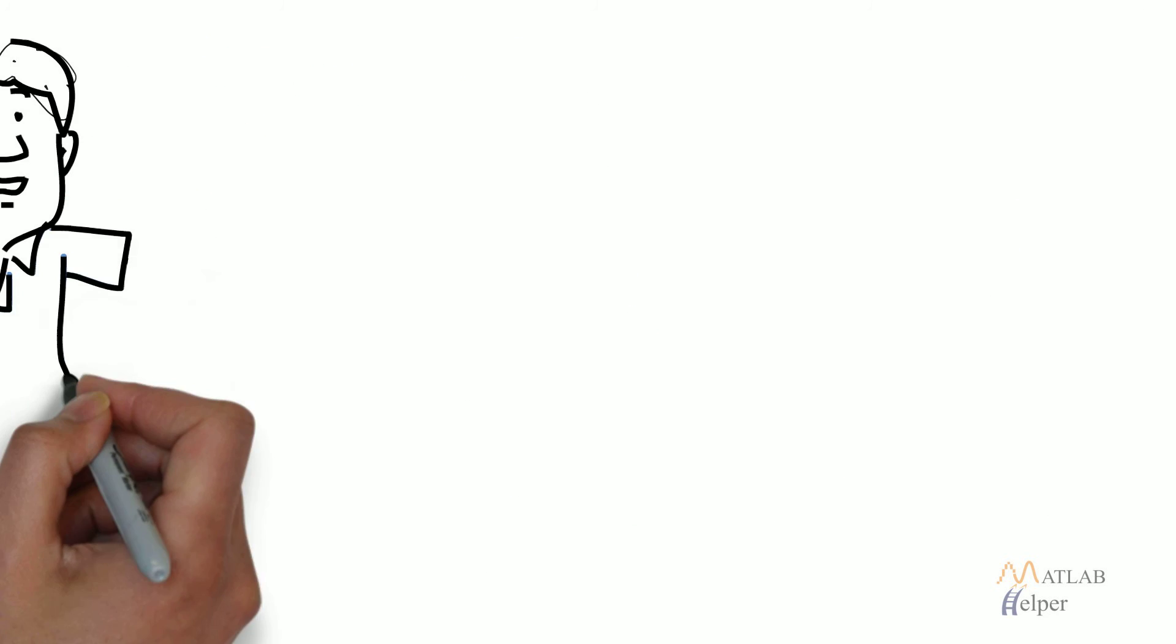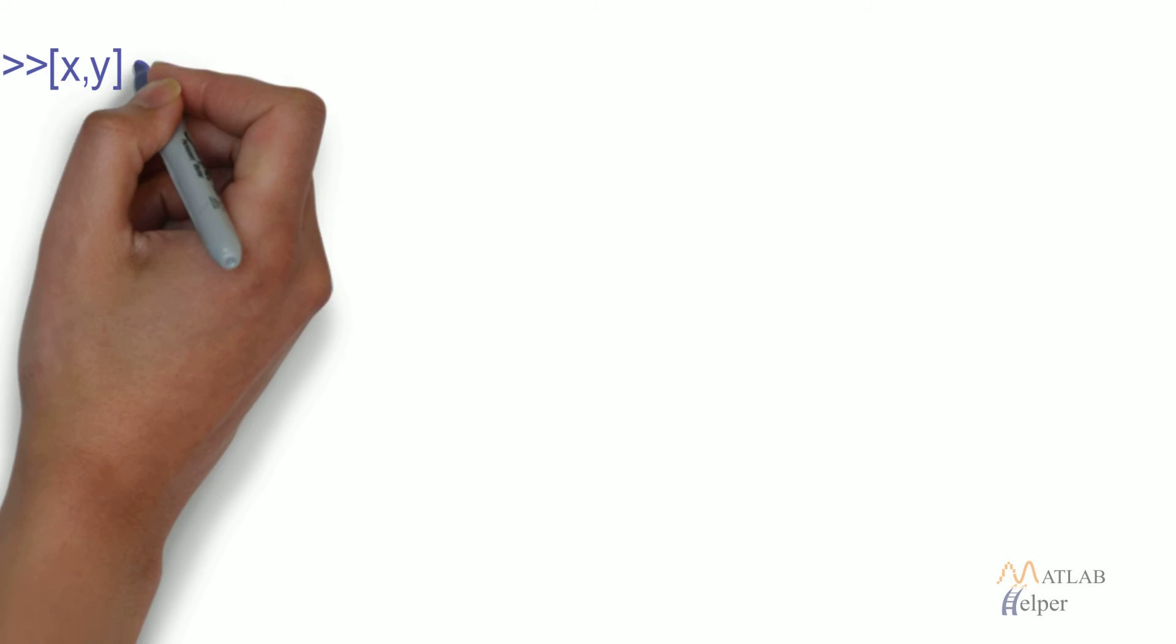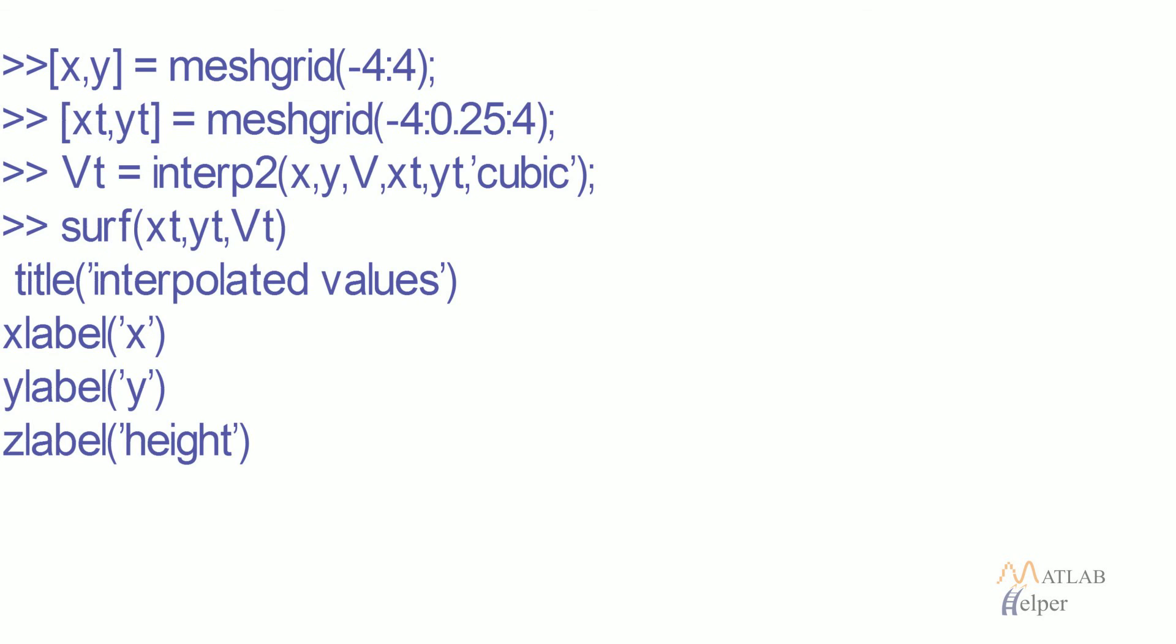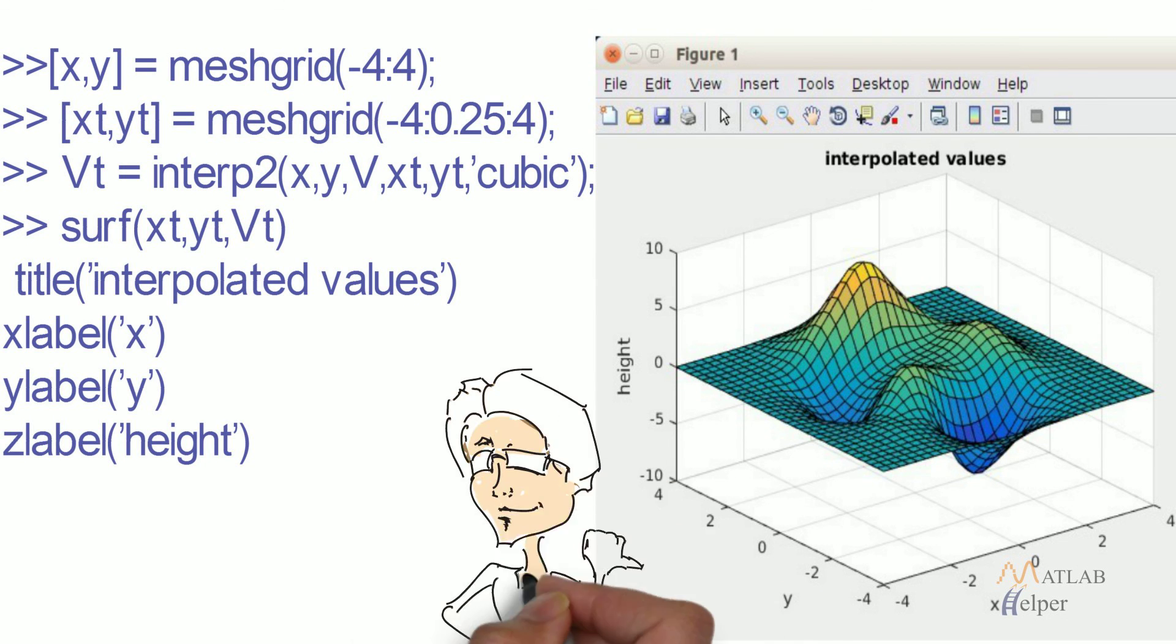We can now perform interpolation by using the function interp2 and defining another grid of finer granularity. We can see in the image, new values in the grid are created filling the space between the already existing ones.